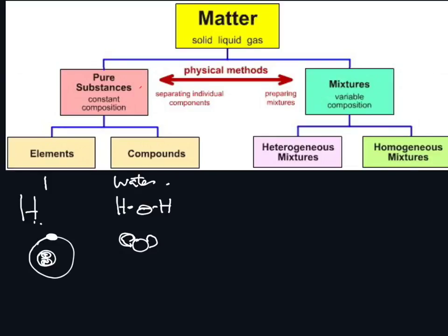In a compound, the elements are combined chemically. Mixtures, on the other hand, are when two or more substances are mixed together — but not chemically bonded.